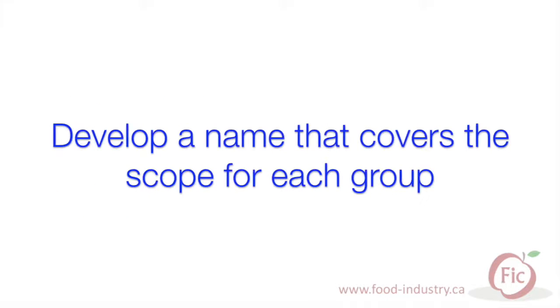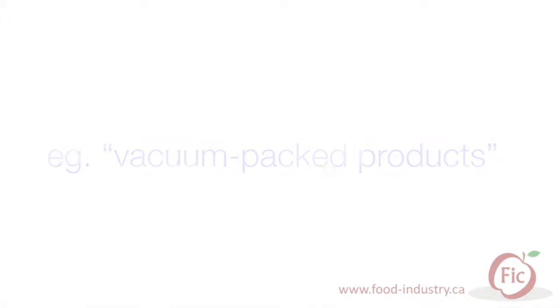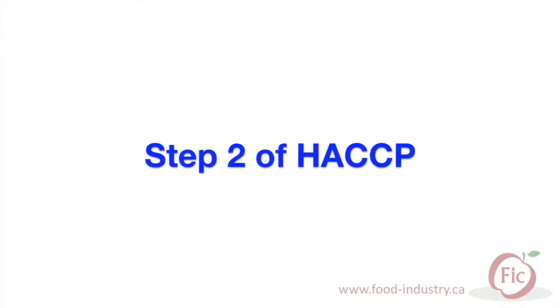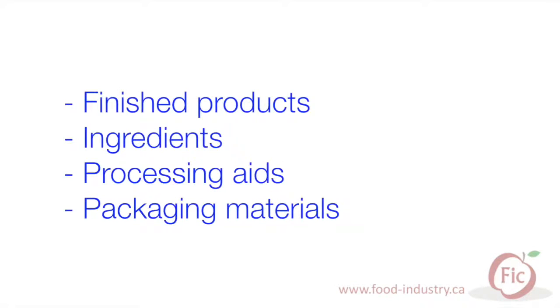Develop a name that covers the scope for each group. This name will be included in the header of each HACCP form. For example, "vacuum packed products" can be used for similar products that are vacuum packed and produced in the same line. After setting the scope and determining products and processes which fall under each HACCP plan, we will move on to the next step, which is about gathering information for finished products, ingredients, processing aids, and packaging materials.